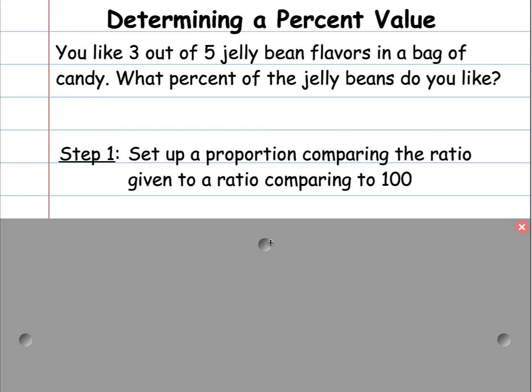So the first thing you want to do is you're going to set up a proportion comparing the ratio given to a ratio comparing to 100. So for the problem, it says we have three out of five jelly bean flavors that we like. And we want to know what's the percent of the jelly beans that we like.